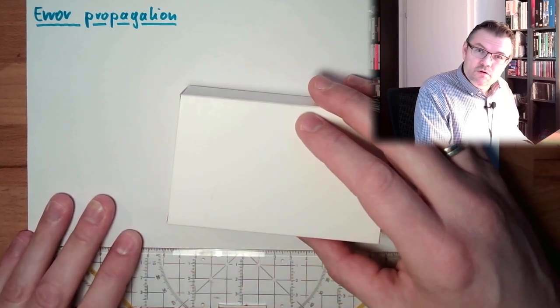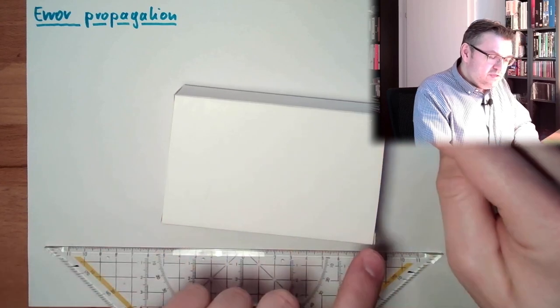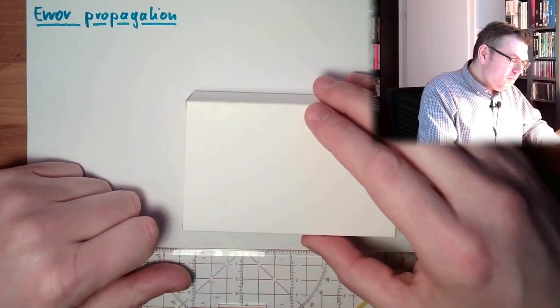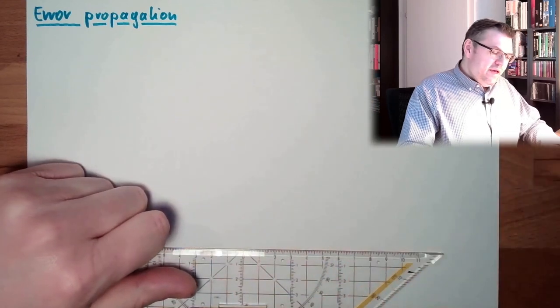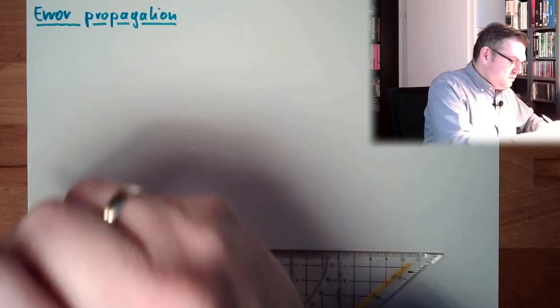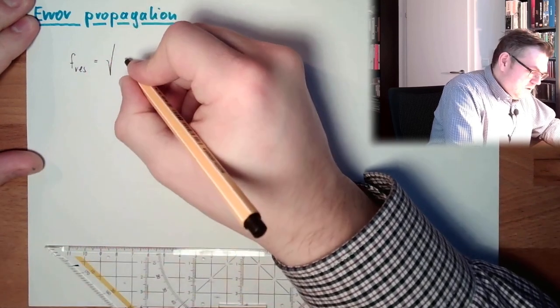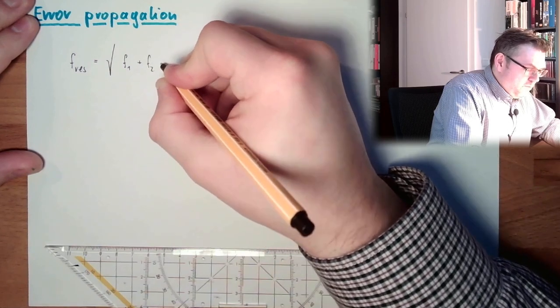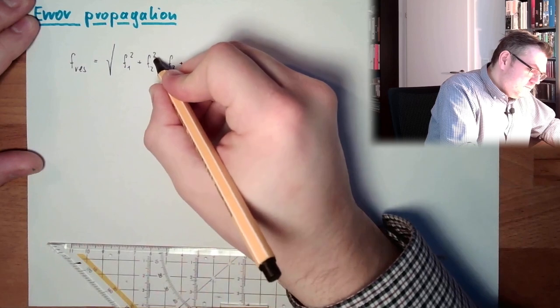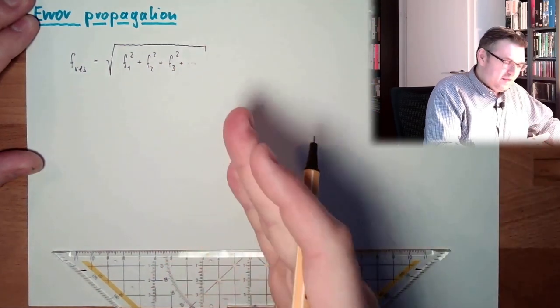Well, there is the so-called error propagation law. It is not three times. This is the good news. It's not three times the error, because sometimes if I measure this length a little bit too much and this length a little bit too short, then they might even compensate each other. So, the error propagation law is a little bit more complex, and it looks like that. If we have somewhere an error, a resulting error, the resulting error is the square root of an error f1 plus f2 plus f3.